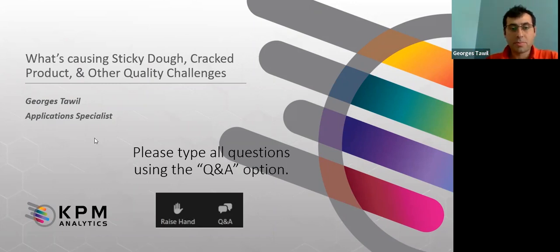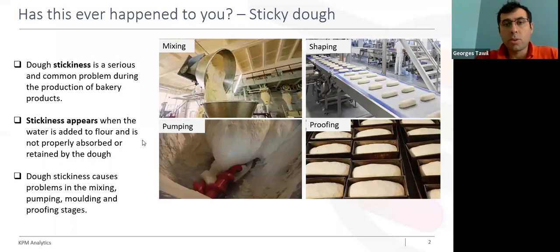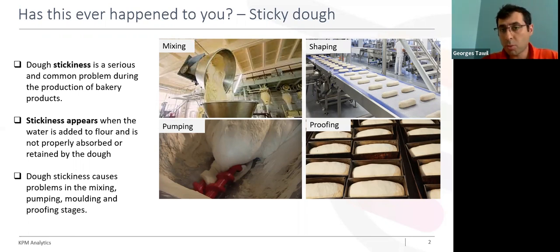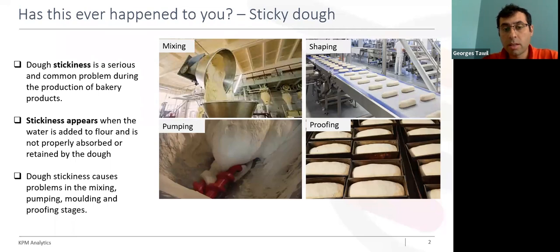Let's start. Today I would like to begin by showing you some technological challenges that the baking industry is facing. I would like to start with sticky dough. Many of you have already encountered stickiness of the dough during production — it can happen at different moments: at mixing, at the pumping stage, during shaping and proofing. The consequences are very serious in terms of cost, and it also alters the efficiency of production.